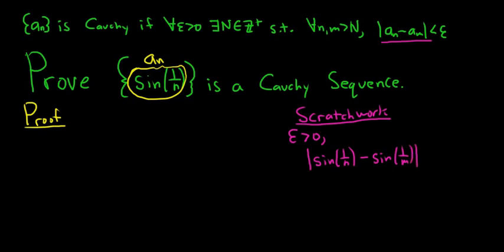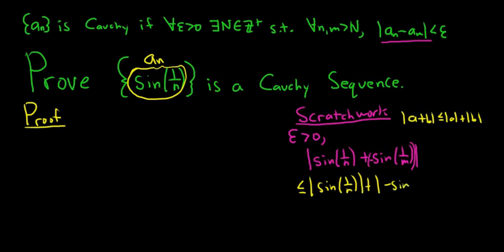You could use a trig identity, but if we think of this as plus negative, we can just jump straight to the triangle inequality. Recall the triangle inequality says that the absolute value of a plus b is less than or equal to the absolute value of a plus the absolute value of b. This will be less than or equal to the absolute value of sine of 1 over n plus the absolute value of negative sine of 1 over m, which equals the absolute value of sine of 1 over n plus the absolute value of sine of 1 over m.